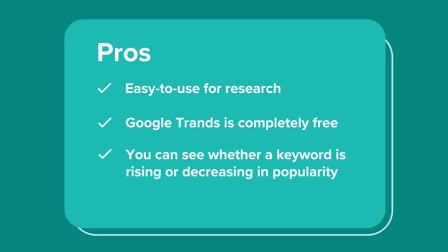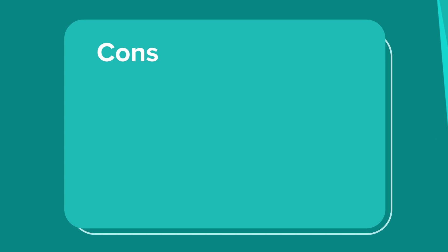You can see whether a keyword is rising or decreasing in popularity, which helps you understand how interested people are in a particular product or niche. The main con is that you don't see values such as keyword difficulty, paid difficulty, and cost per click for the keywords you're researching.